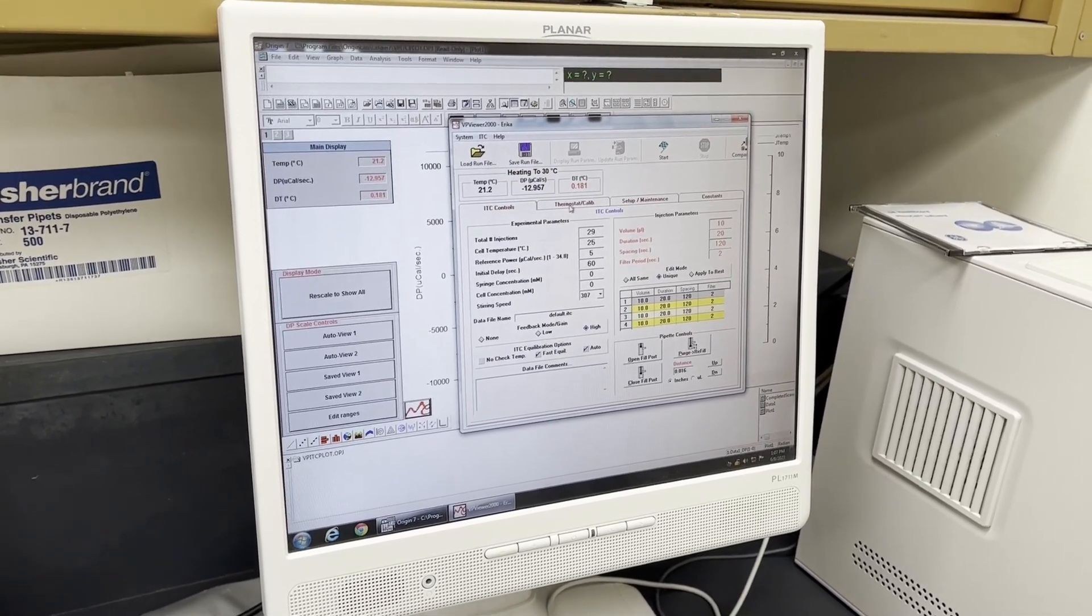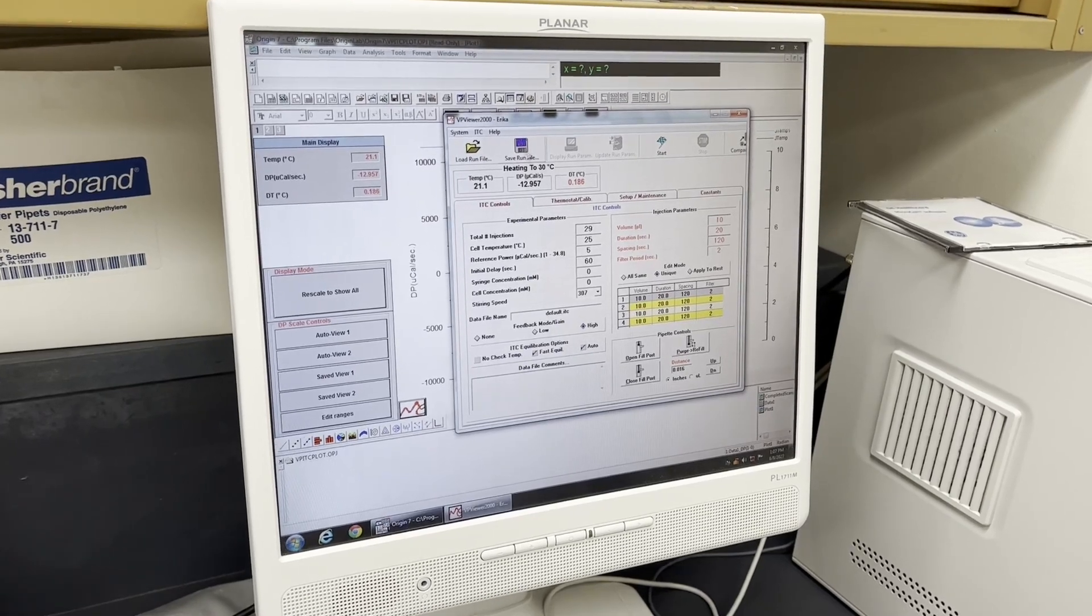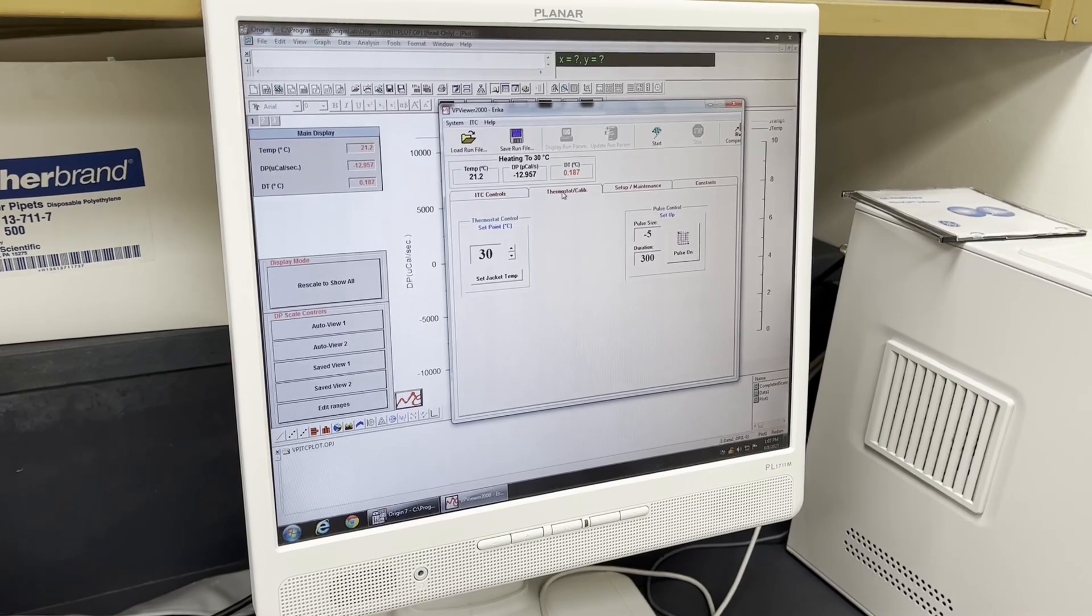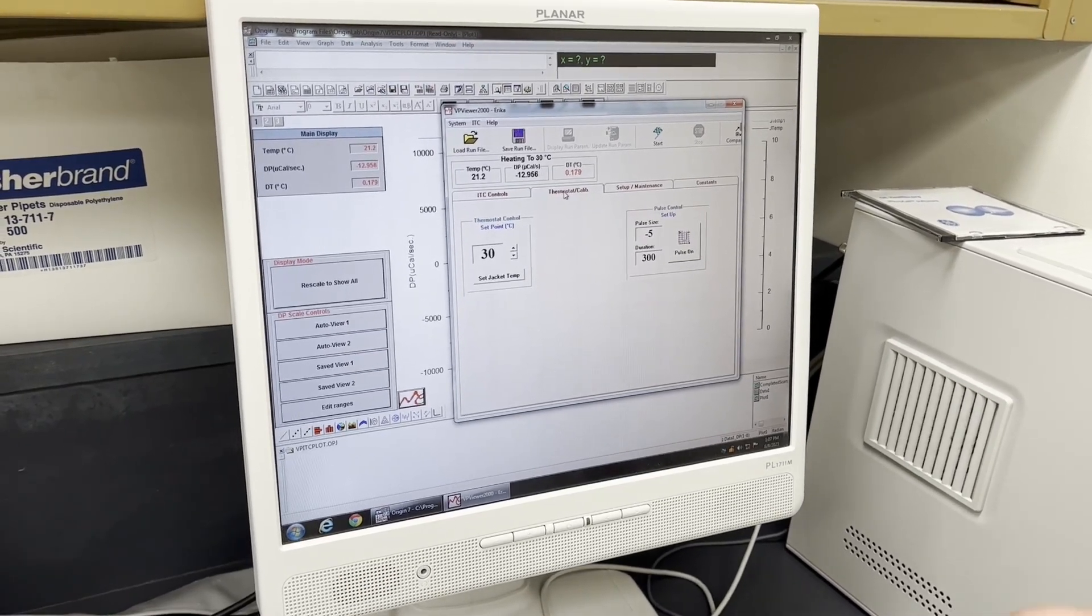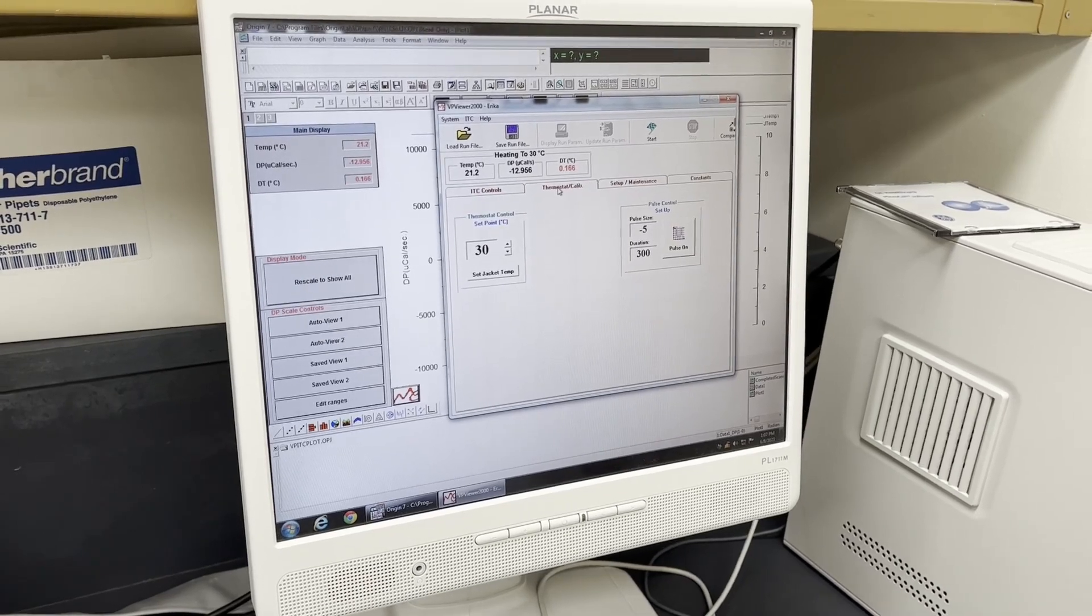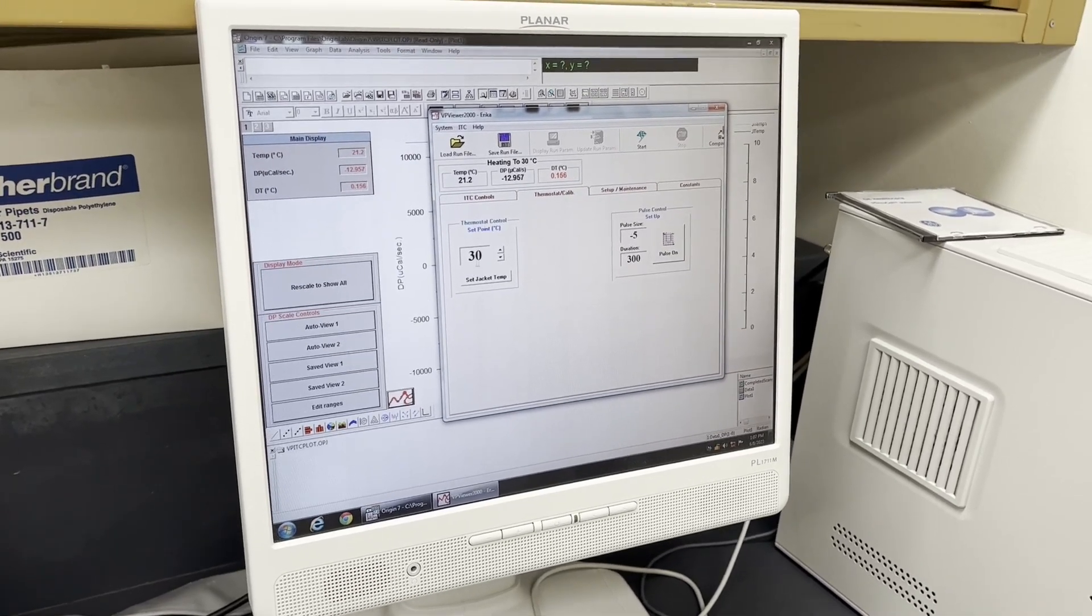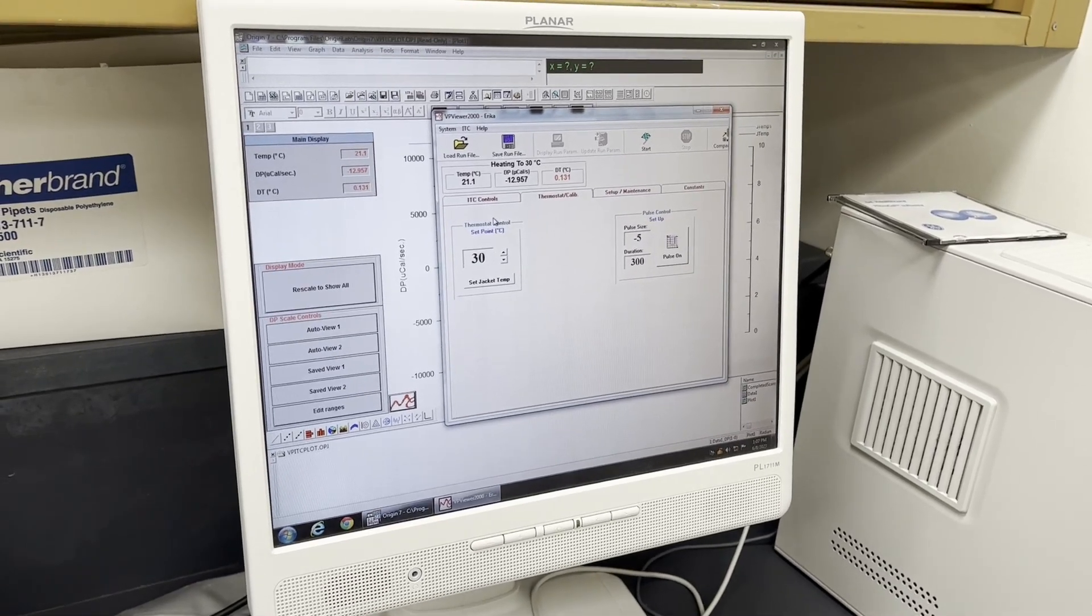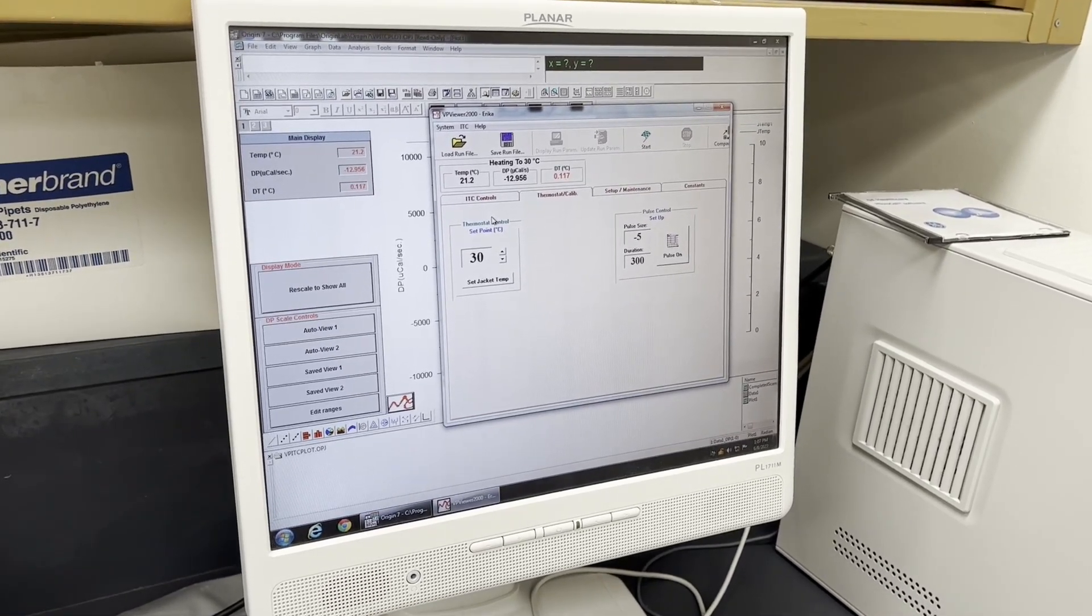What you want to make sure, we can keep it to 30 degrees, but it takes a lot longer for the ITC to cool down than heat up. So if you're planning on running your sample at 25 degrees or room temperature, you may want to change this to 24 or 25 degrees just so it can establish that baseline before you start your run.